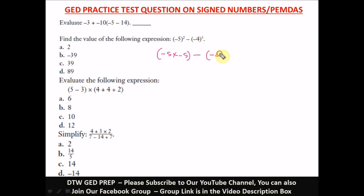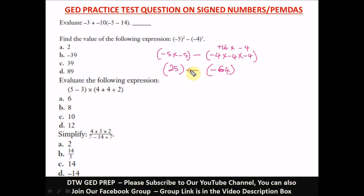Negative 4 cubed means negative 4 times negative 4 times negative 4. Negative 5 times negative 5 — a negative times a negative is positive — gives us positive 25. Then negative 4 times negative 4 gives us positive 16, and positive 16 times negative 4 gives us negative 64. Now we open the bracket: the minus outside affects the sign inside, so negative times negative 64 becomes positive 64.